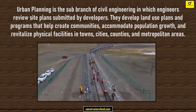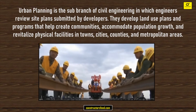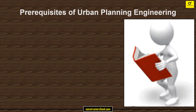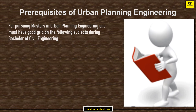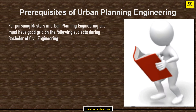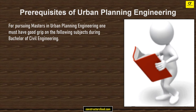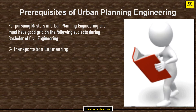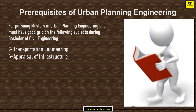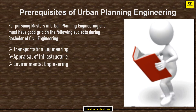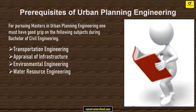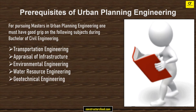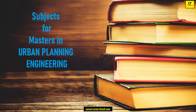Prerequisites of urban planning engineering: for pursuing a Masters in urban planning engineering, one must have a good grip on the following subjects during a Bachelor of Civil Engineering — transportation engineering, appraisal of infrastructure, environmental engineering, water resource engineering, and geotechnical engineering. These are the subjects for Masters in urban planning engineering.